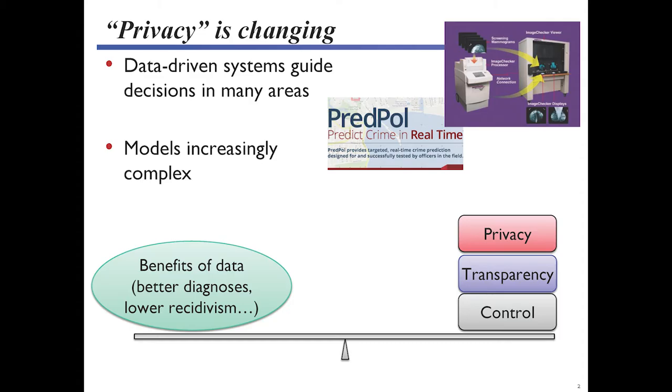Data-driven systems guide decisions in all sorts of areas of our lives, from predictive policing to medical diagnoses and everything in between. The models and statistical reasoning that drives these systems is increasingly complex. We're faced with trying to understand how we can get the benefits of all the data we're now collecting and these increasingly complex prediction and inference models, while balancing them against concerns about the side effects these systems have on our lives — questions of privacy, transparency, control, accountability, fairness, and all sorts of concepts that go with automating large systems and important decisions.